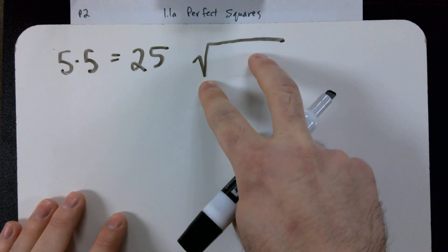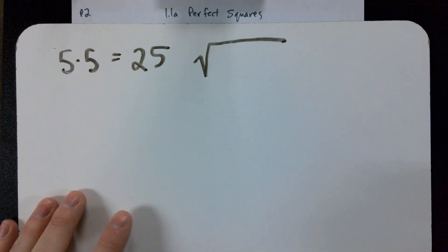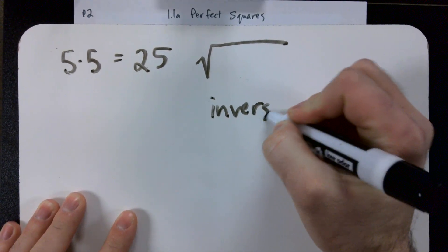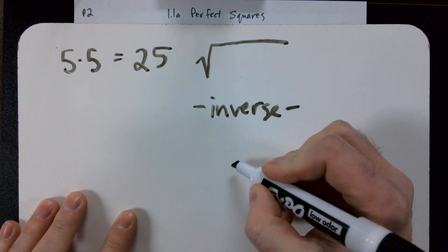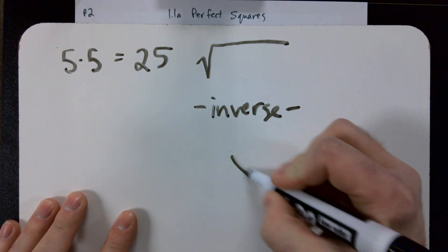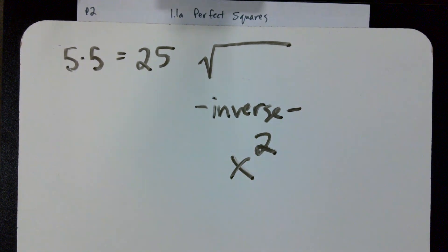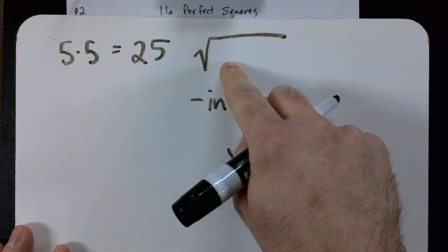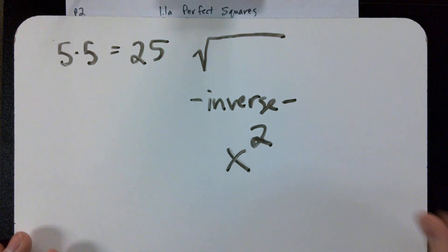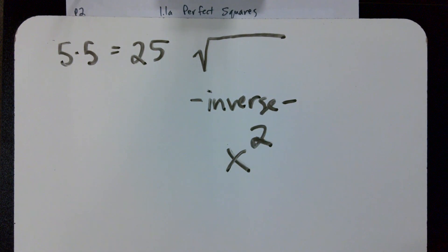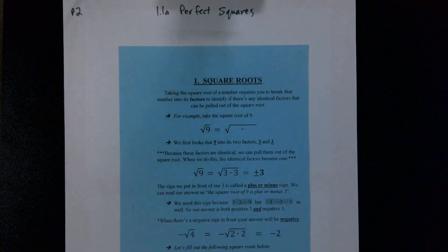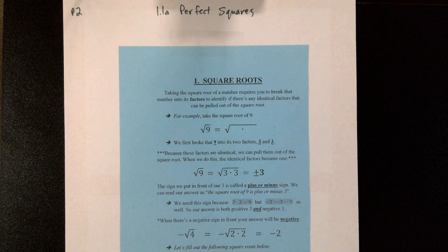This right here is the inverse — you don't have to write this down, I'm just showing you. It's the inverse of doing this: squaring a number. This is called a square root. It's the inverse of squaring a number. Let's see what that actually looks like.